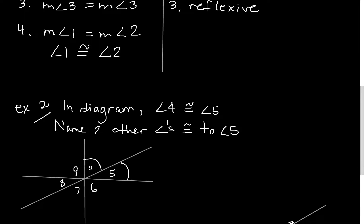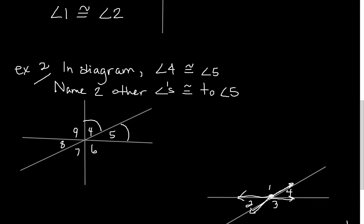Here's another example. In the diagram, angle four is congruent to angle five. Name two other angles congruent to angle five. We know vertical angles give us that angle four is congruent to angle seven, and angle five is congruent to angle eight. So two angles congruent to angle five are angle seven and angle eight. We get angle seven by the Transitive Property: five is congruent to four, and four is congruent to seven, so five is congruent to seven.